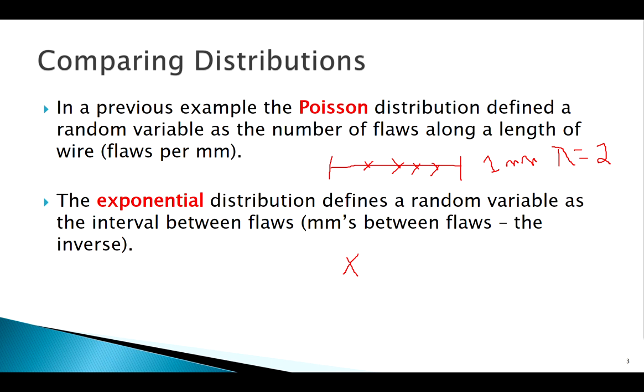Whereas the Poisson was a fixed interval and it counted how many events happen on that interval, the exponential says, okay, here is an event that has happened, what does this interval look like up until that event? So that interval then is going to be a measurement. It might be a certain amount of time. In this example, it might be a certain length, millimeters between flaws.